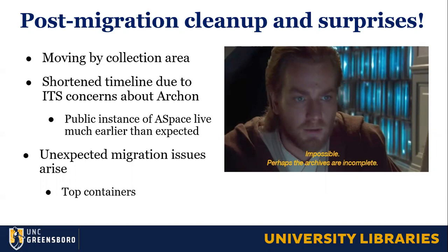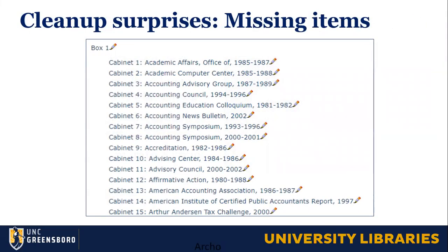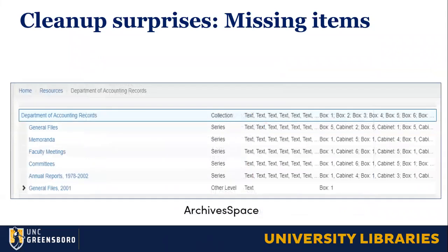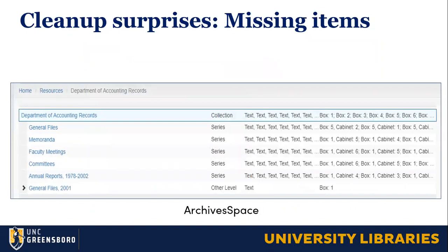We pushed the public instance of ArchivesSpace live much earlier than we really anticipated. I created a special landing page for our finding aids that explained the differences in access and linked out to both Archon and ArchivesSpace, and just mentioned to people that we were still doing cleanup. We also noticed lots of surprises — the archives were sometimes incomplete. Top containers in particular were one of our biggest areas with issues. This is a screenshot from Archon showing how the finding aid should look, with the box and all items linked to their folders. But this is how it imported into ArchivesSpace — that series is there, but the individual items did not come through.